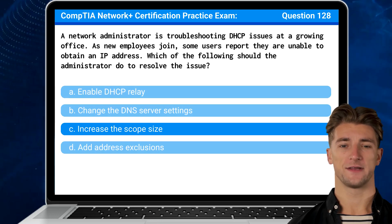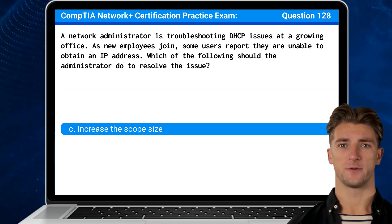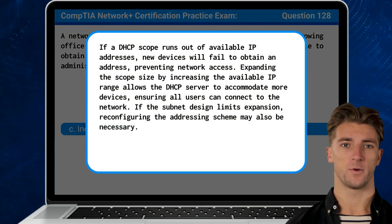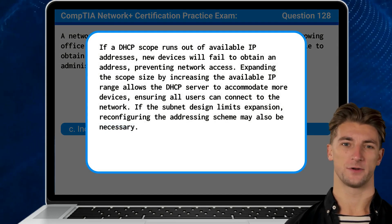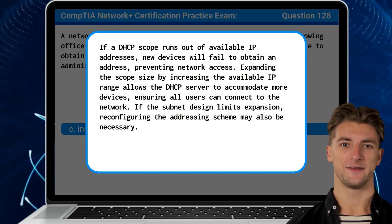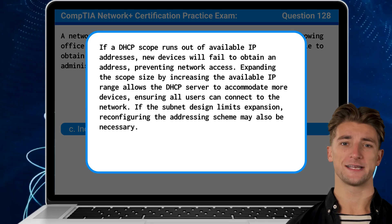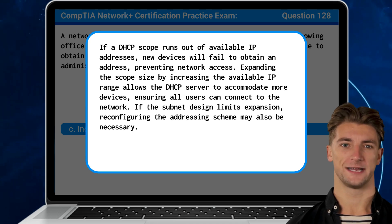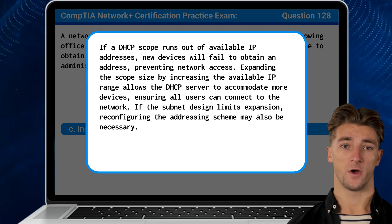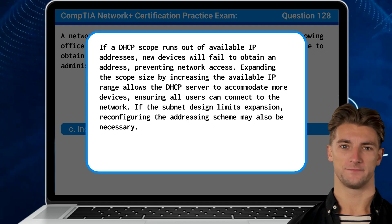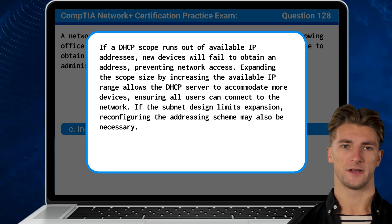The answer is C — Increase the scope size. If a DHCP scope runs out of available IP addresses, new devices will fail to obtain an address, preventing network access. Expanding the scope size by increasing the available IP range allows the DHCP server to accommodate more devices, ensuring all users can connect to the network. If the subnet design limits expansion, reconfiguring the addressing scheme may also be necessary.